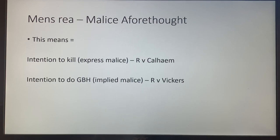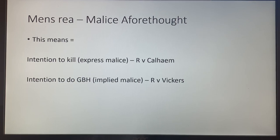In terms of mens rea, as I said, it's malice aforethought. That means either intention to kill or intention to do GBH. Don't get too caught up with the names express and implied malice — you can ignore those if you want. Intention to kill means express malice; intention to do GBH means implied malice. You can simply use the phrases 'intention to kill' or 'intention to do GBH' if you prefer.